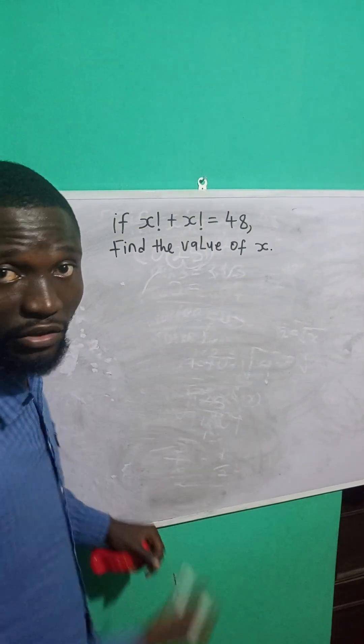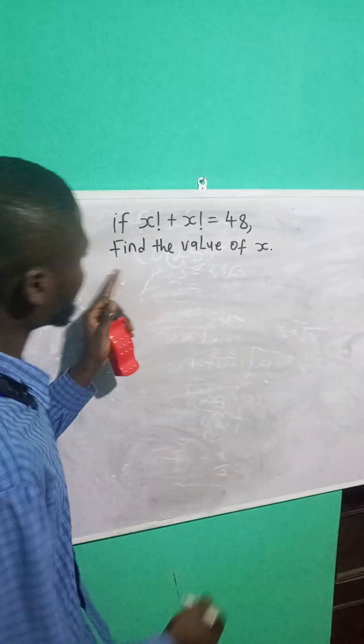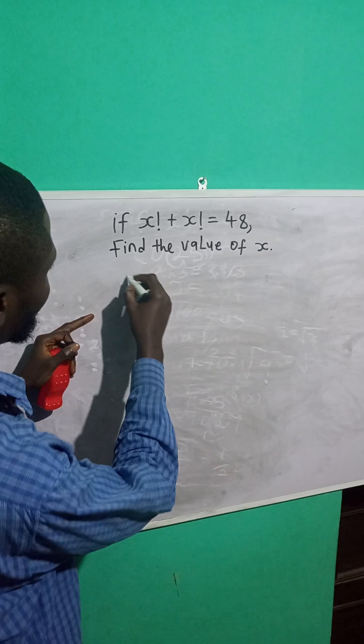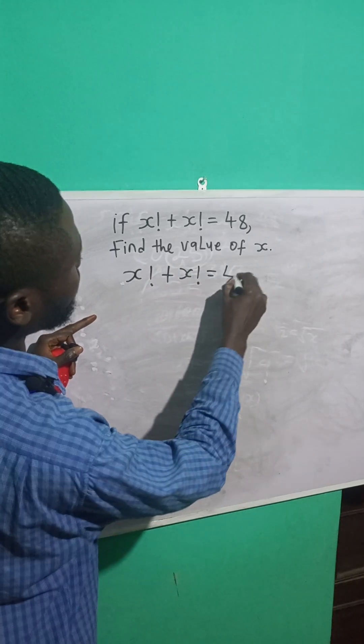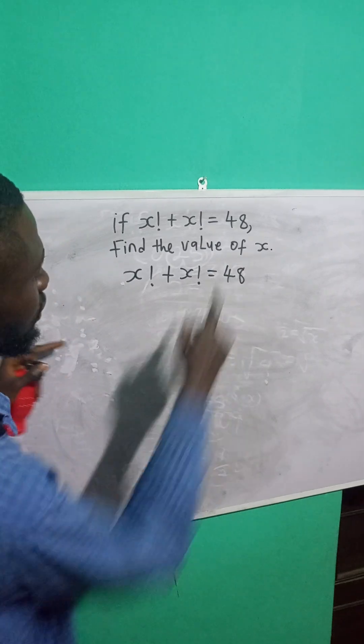If x factorial plus x factorial is equal to 48, find the value of x. So x factorial plus x factorial is equal to 48. Find the value of x.